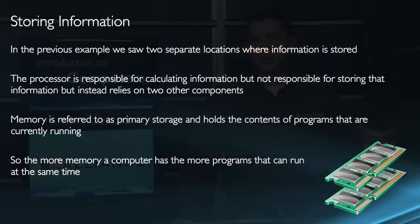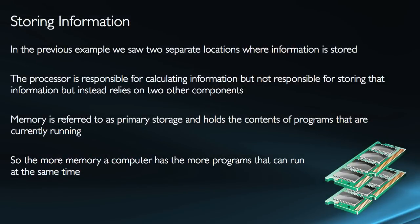Now we're going to take a look at how we store information in the PC. In our previous example, we saw that there were two different locations where information was stored. The processor is responsible for calculating information, but it's not responsible for storing it. So instead, the processor relies on two other components to retrieve data and have it available when it's up and running.